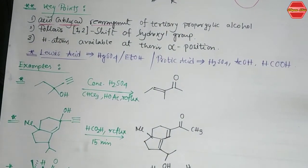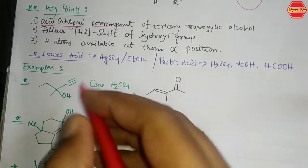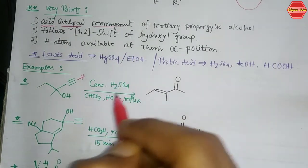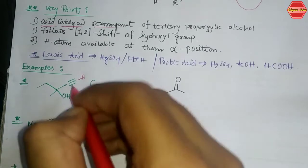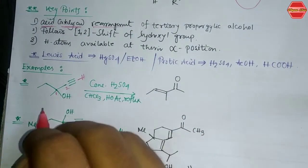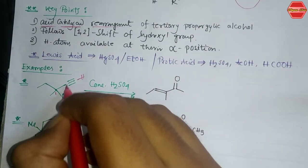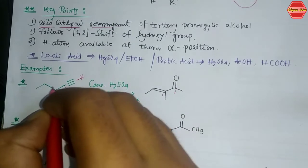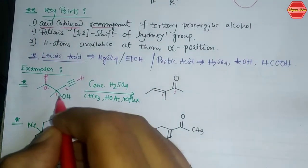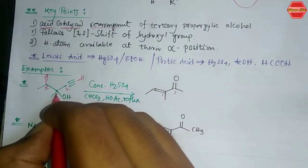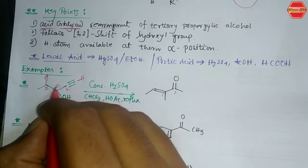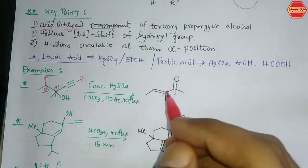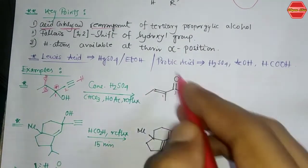Examples of the Rupe rearrangement: in the first example you have a terminal alkyne — a propargylic alcohol. With a strong acid like concentrated H₂SO₄, this is your carbon 1 and carbon 2, so it is a 1,2-hydroxyl group shift — the OH is placed at carbon 2. You have an alpha hydrogen present. The alpha position is near the carbocation (first position relative to the positive charge), and after the reaction you get the final product.